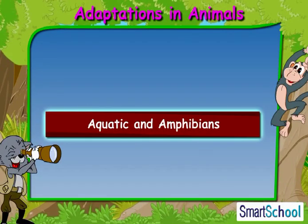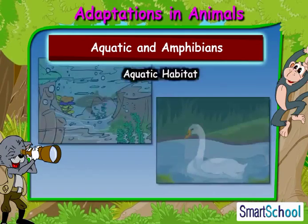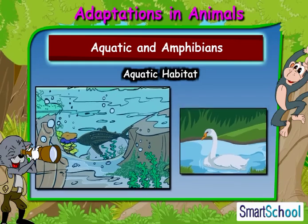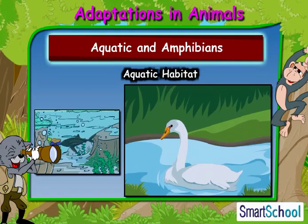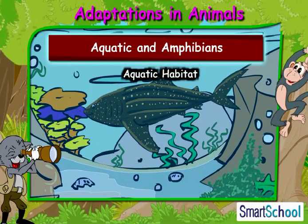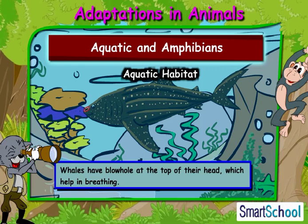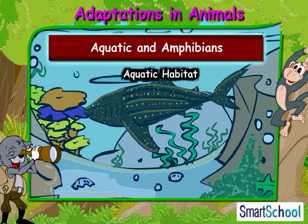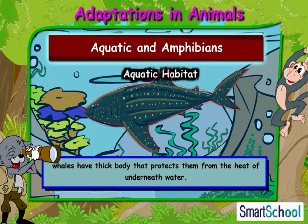Now let us learn about different habitats like aquatic and amphibious. Aquatic habitat consists of water-living animals such as whale, duck, etc. Let us take the example of whale to understand its adaptations. Whales have a blowhole at the top of their head which helps them in breathing. Whales also have a thick body that protects them from the heat of underwater.